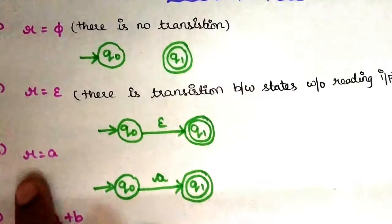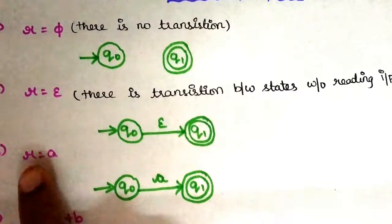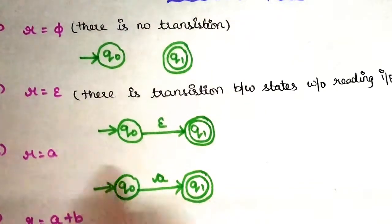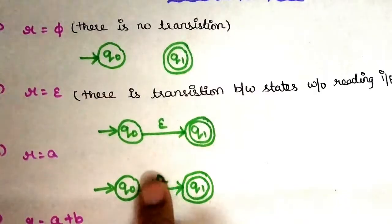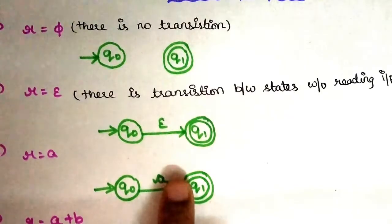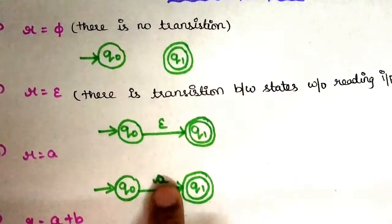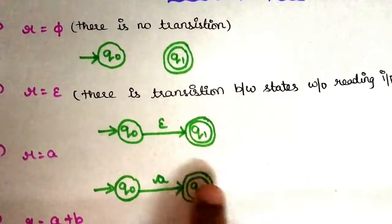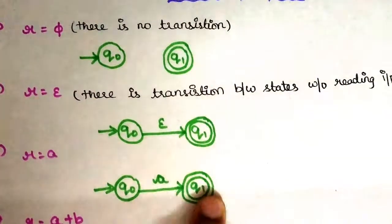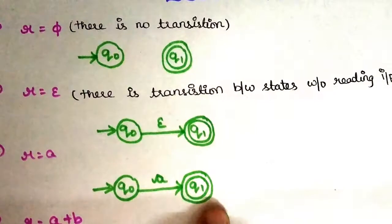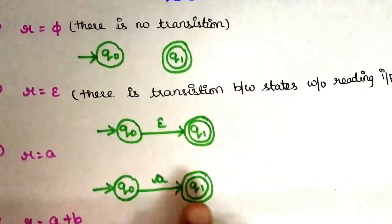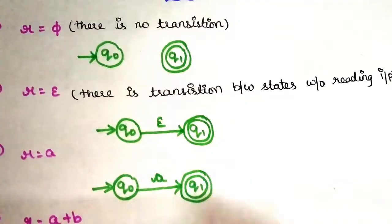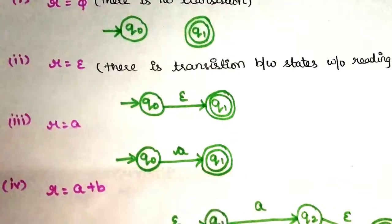So, r is equal to a. You have an input string a. Then q0 is updated — a is updated in a state, and q1 is updated in a state. If you write a finite automata, you can find a starting state and there is a final state.